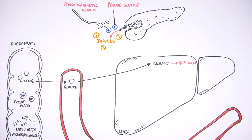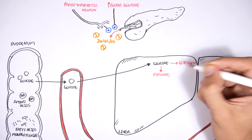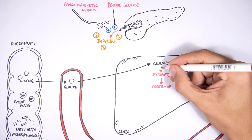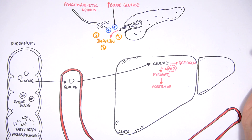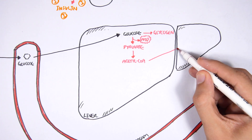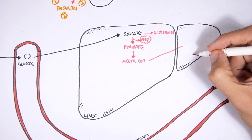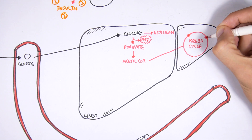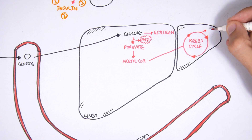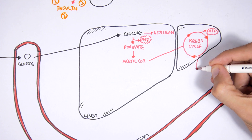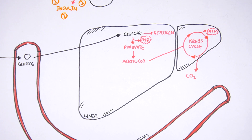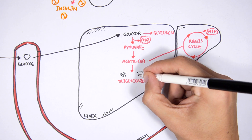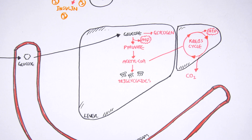After that, glucose can be converted to pyruvate to produce energy — ATP. Pyruvate can then convert to acyl-CoA, which can enter the Krebs cycle to produce more ATP as well as carbon dioxide as metabolic waste. Alternatively, acyl-CoA can produce fatty acids, which can then form triglycerides.